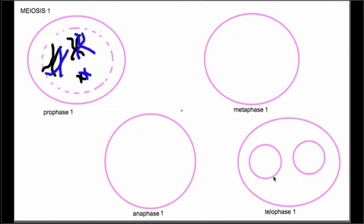This covers how that shuffling of parental information happens in meiosis I. Meiosis I starts with prophase I, where the nuclear envelope dissolves and the spindle fibers start to form, just like in mitosis. The chromosomes condense in prophase I, and also unique to prophase I of meiosis I, the homologous pairs pair up with each other.